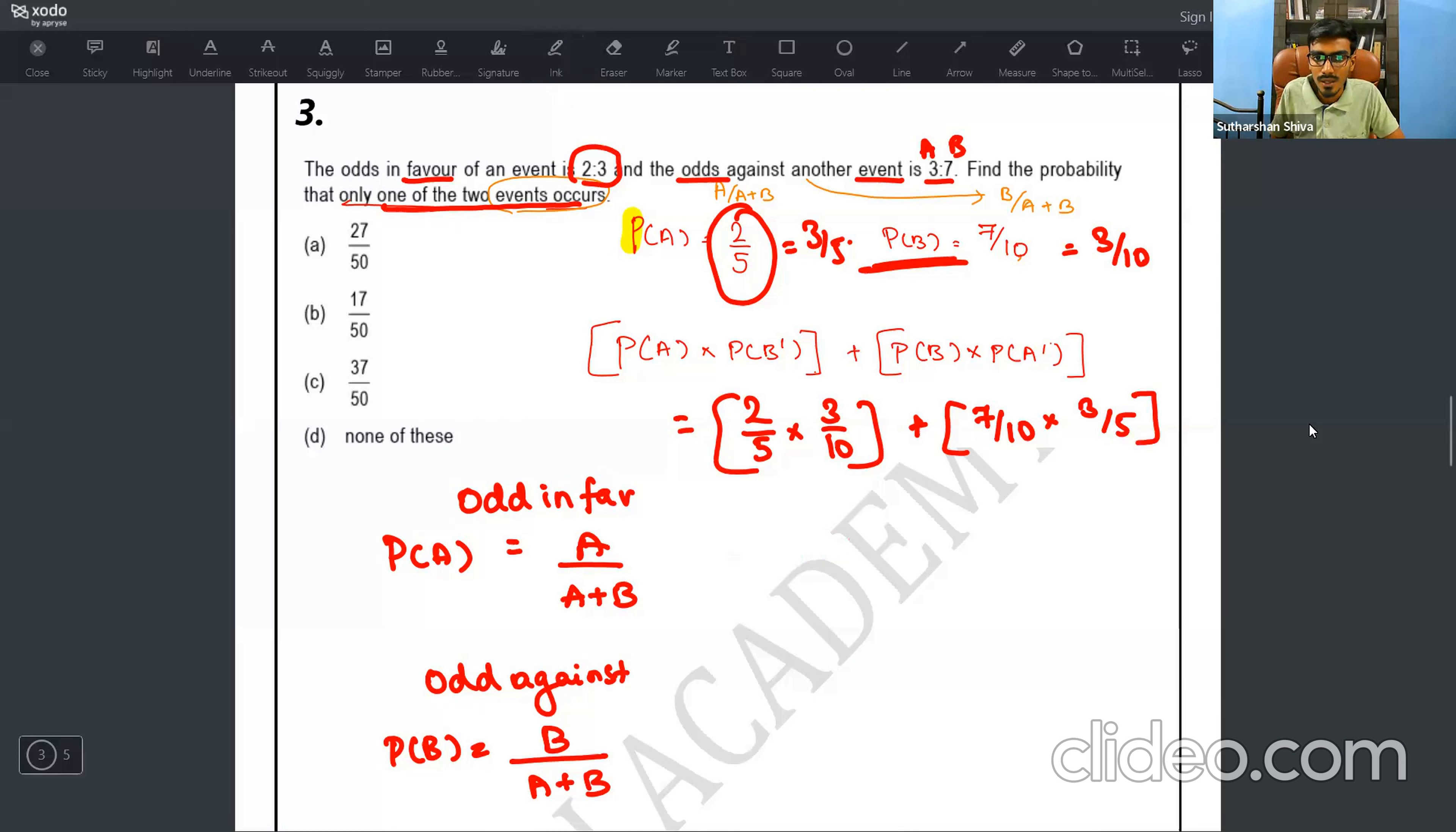It is two by five, P of B dash is equal to nothing but three by 10. Three by 10. This will be one set plus what is P of B? It is seven by 10 into what is P of A dash? It is nothing but three by five. So if I put it, I will get six by 50 plus 21 by 50. Don't cancel it. Simply add the numerator and the denominator is same. So it is 27 by 50. My answer is option A.